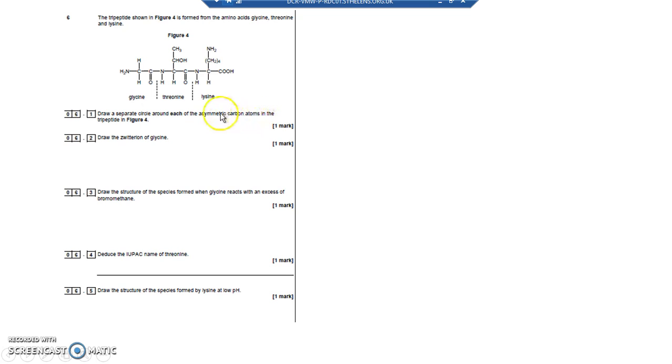Draw a separate circle around each of the asymmetric carbon atoms—that's a carbon with four different groups attached. It's not this one, that carbon's got two hydrogens. Here's a carbon with a group going this way which is different from a group going this way, and H going that way, and a CH3-CHOH going that way.